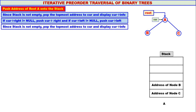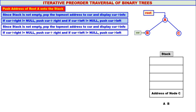Again, the stack is not empty. We pop the topmost address — the address of node B — to curr, and B is displayed. Curr's right is null, so no pushing. Curr's left is also null, so no pushing.